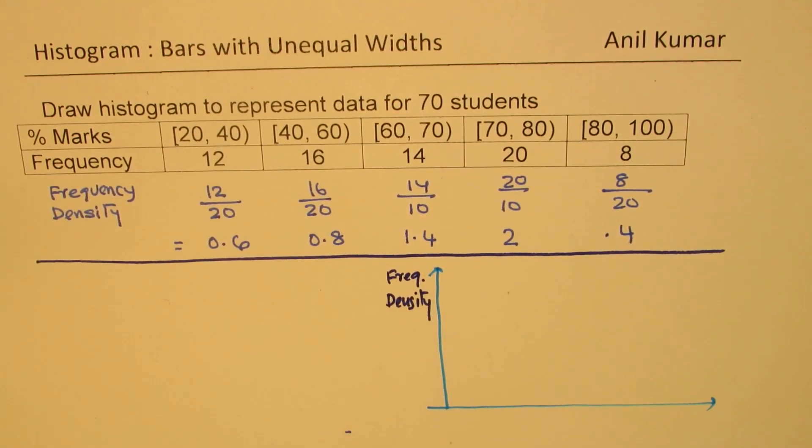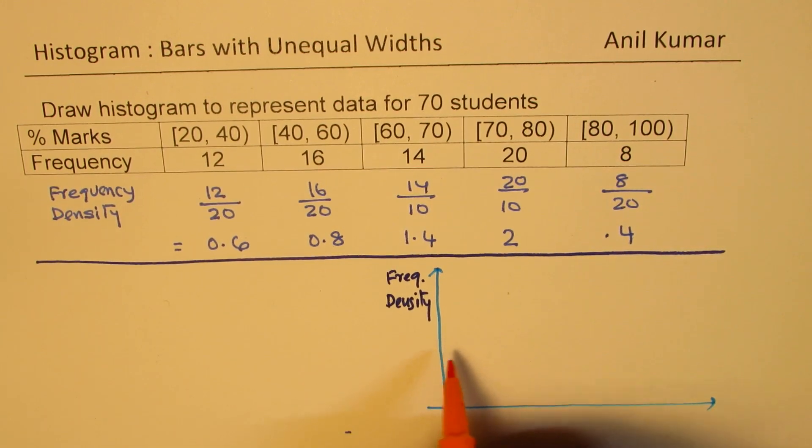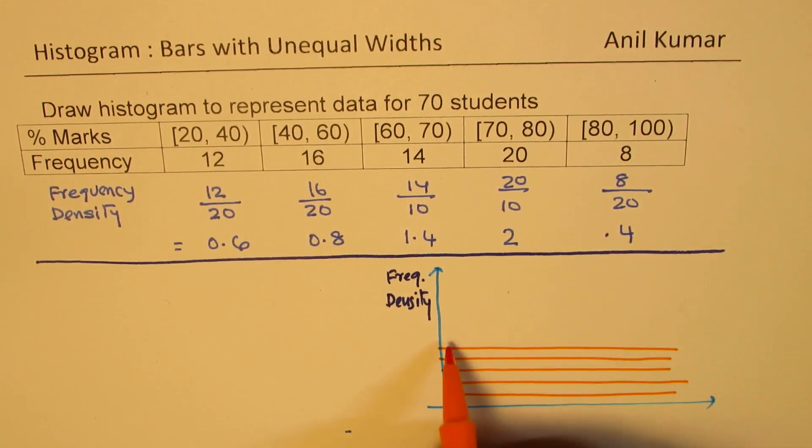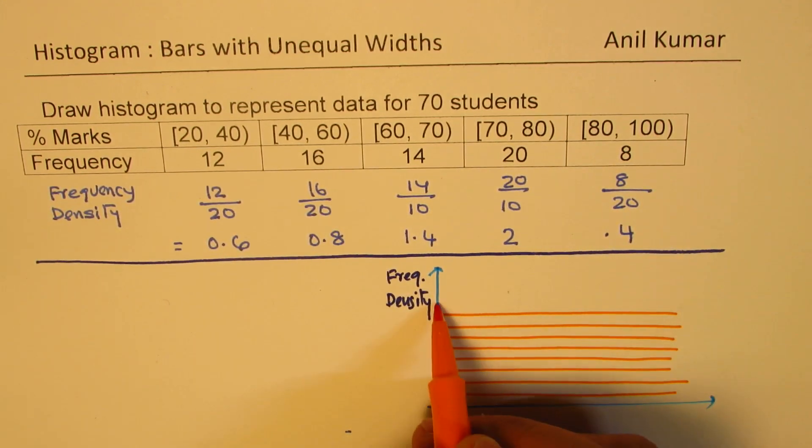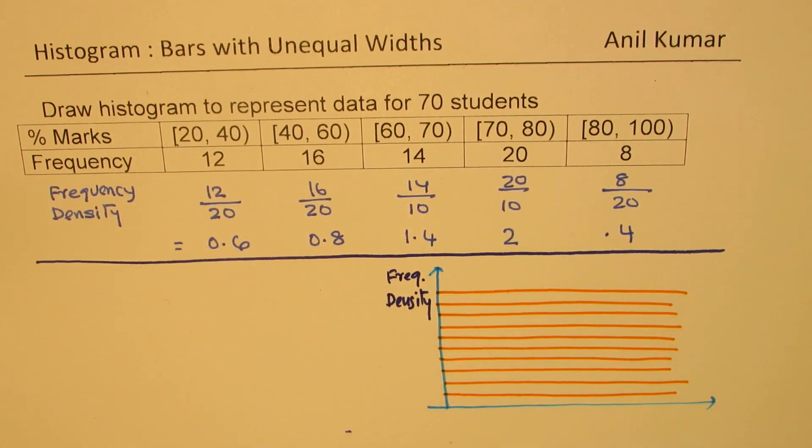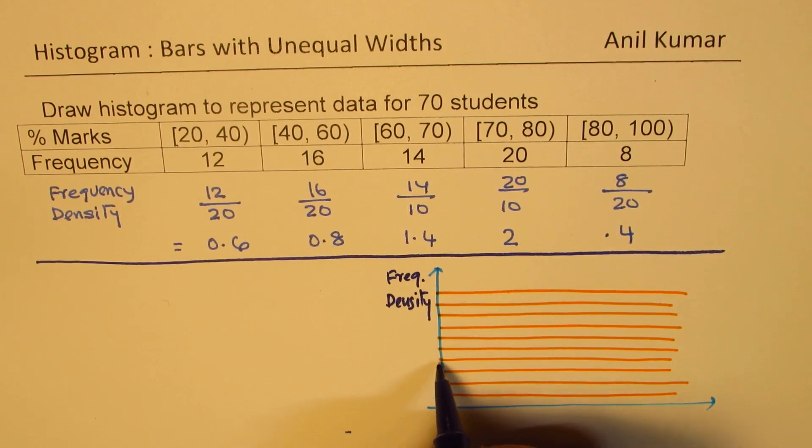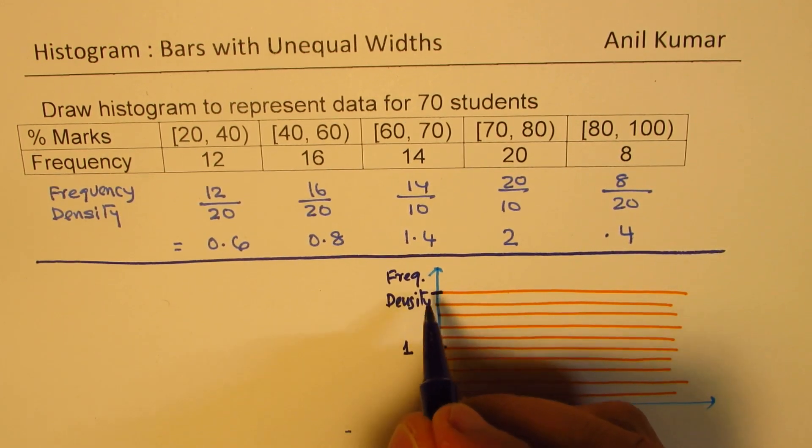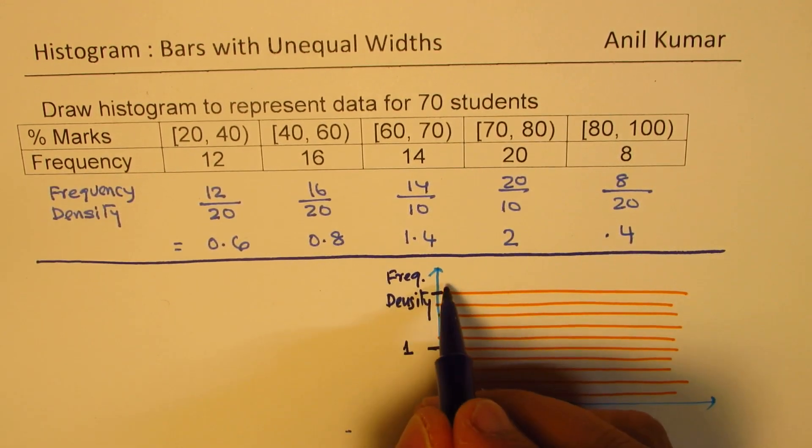We have up to 2 for frequency density. Let me make a graph here with each division as 0.2. So marking 1, 2, 3, 4, 5 intervals gives us 0.2, 0.4, 0.6, 0.8, 1.0. Then continuing: 1.2, 1.4, 1.6, 1.8, 2.0.